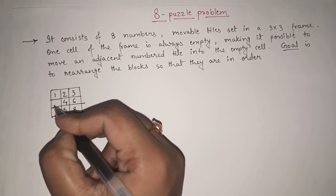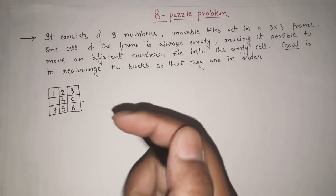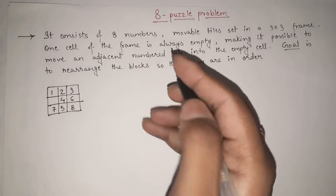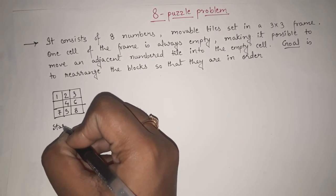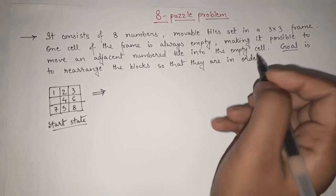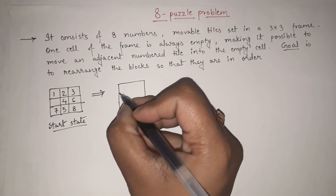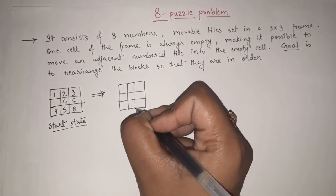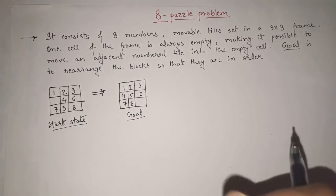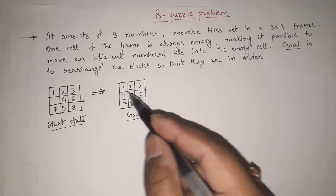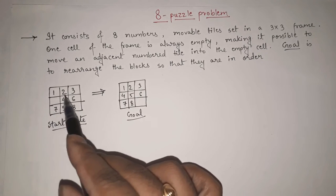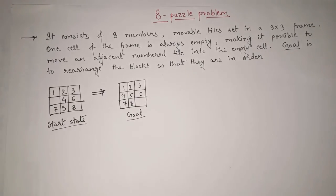One of the boxes in this frame is empty. We have to rearrange the numbers step by step to reach the goal. This is our initial state or start state. The goal is to rearrange the blocks so they are in order — 1, 2, 3, 4, 5, 6, 7, 8 — with the last box empty. In the 8 puzzle problem, we have to switch the blank space and numbers such that at the end we get this goal state.